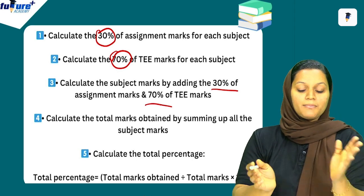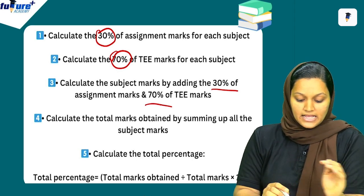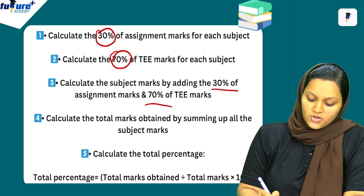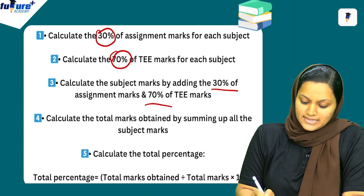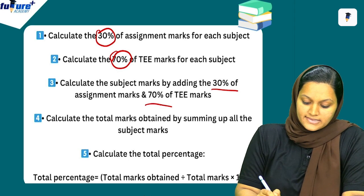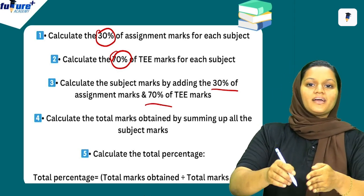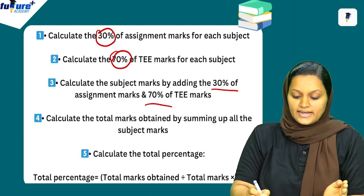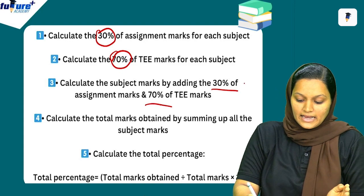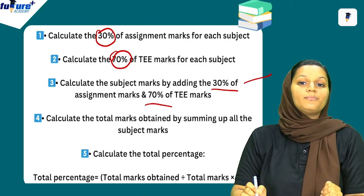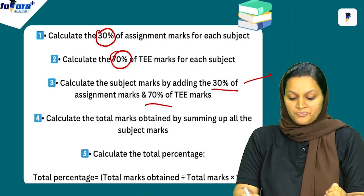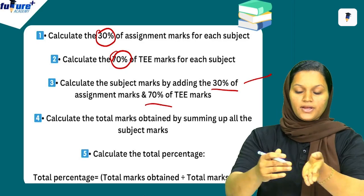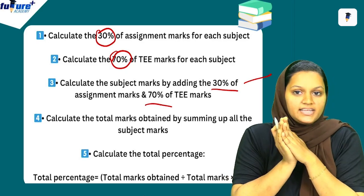The third step is to calculate the total marks obtained by summing up the subject marks. We can add all the marks — all the total marks — then calculate the total percentage.